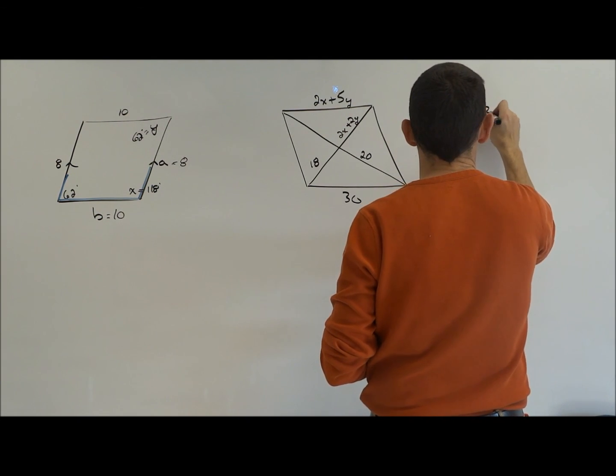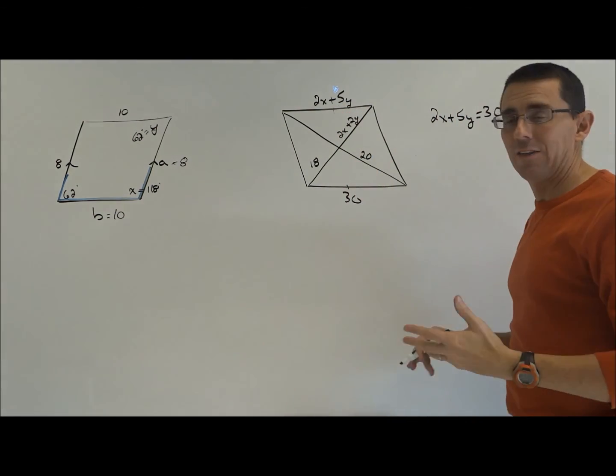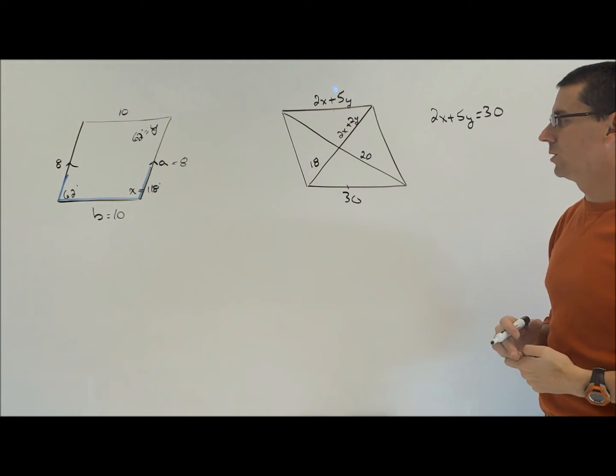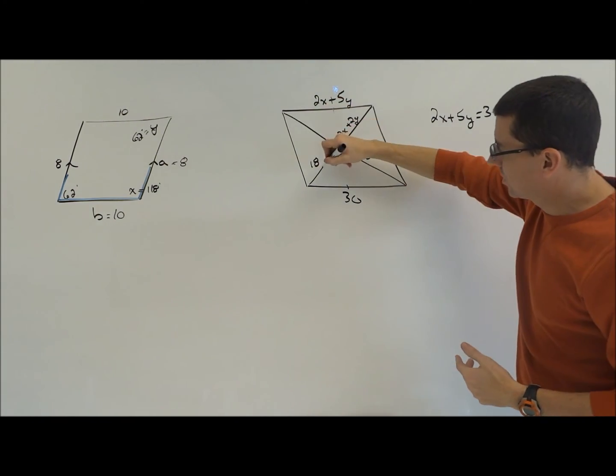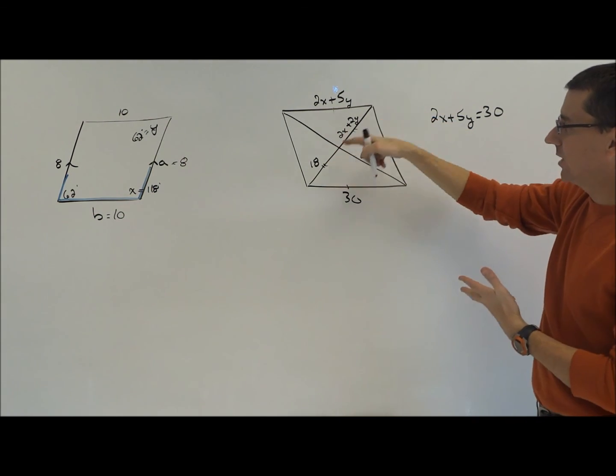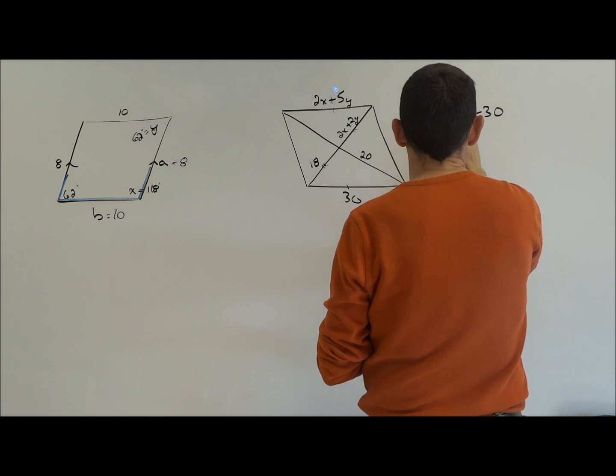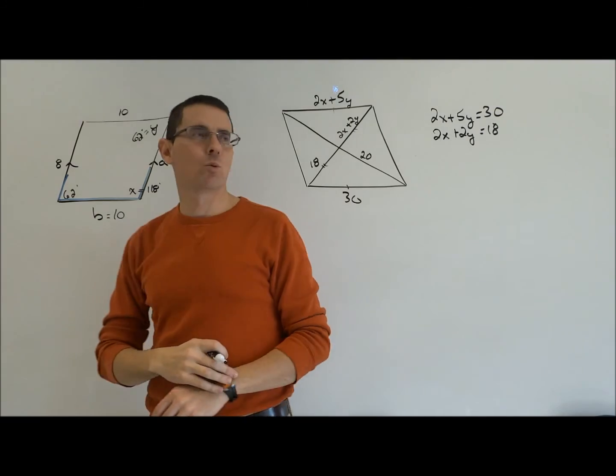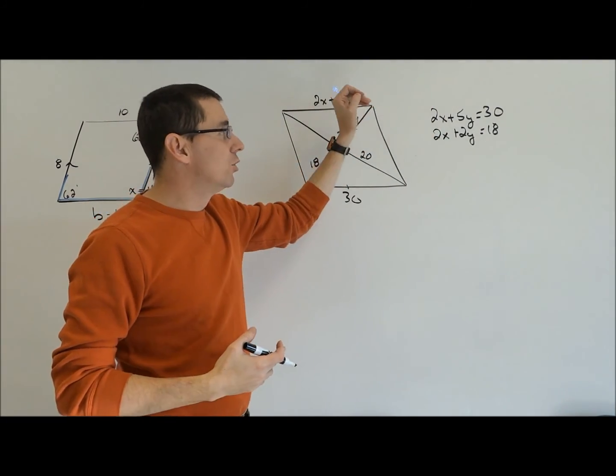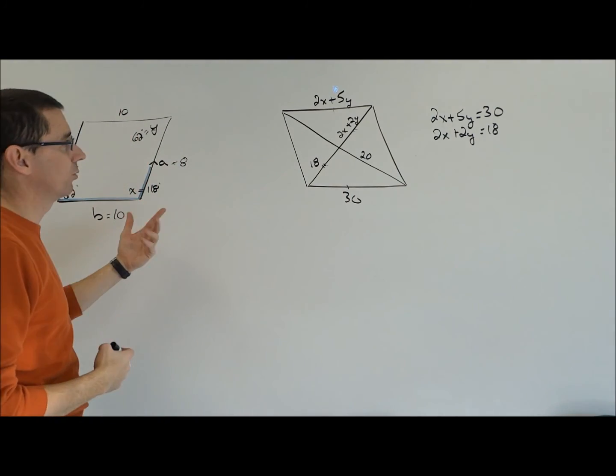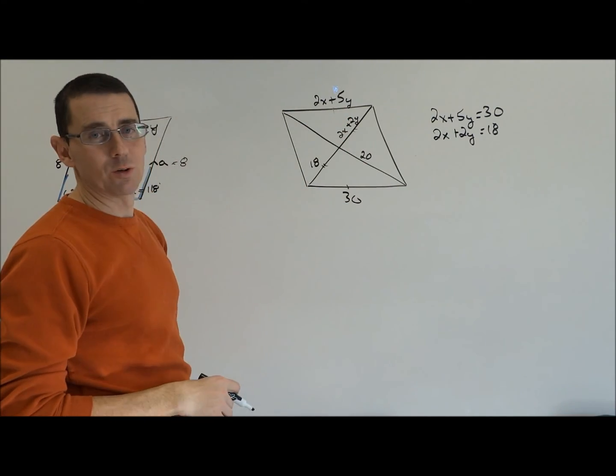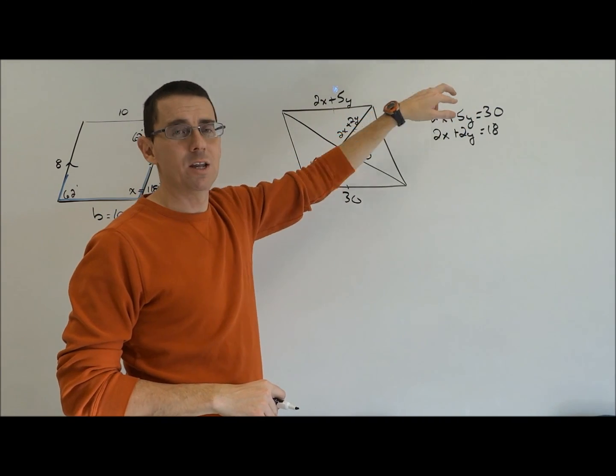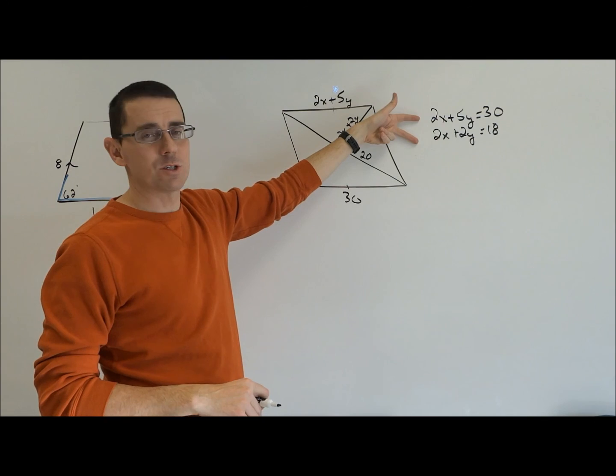So again, 2X plus 5Y equals 30. And again, they're stating before we start these that both of these shapes are parallelograms, which is why we can use those things. The next thing is that diagonals bisect each other. So my next equation is going to be, hey, 18 and 2X plus 2Y have to be equal to each other. So now it's like flashback to Algebra 1, how do I solve equations that have two variables in it? Like if it had one variable in it, if it was just 2X equals 30, it would be easy to solve. But now it's 2X plus 5Y. So whenever you have an equation with two unknowns in it, you want to get two equations out of it, which we did.